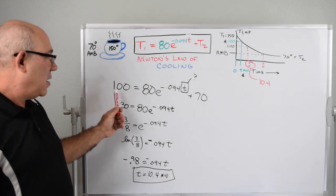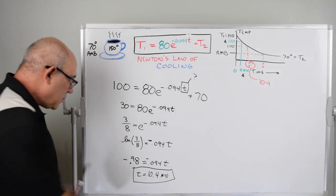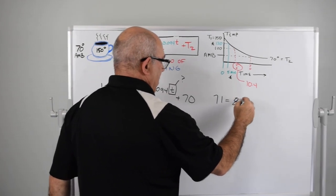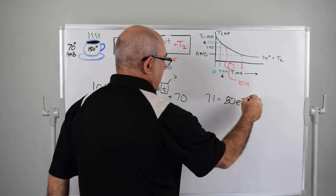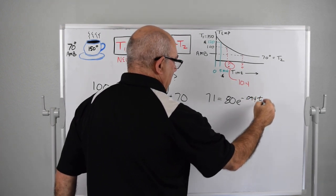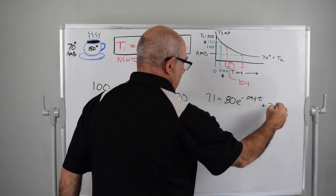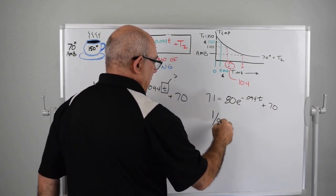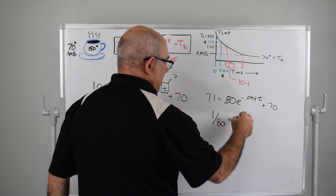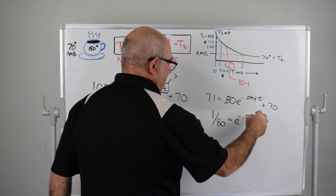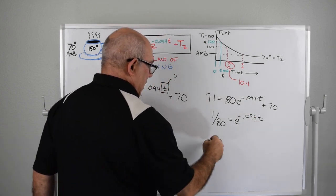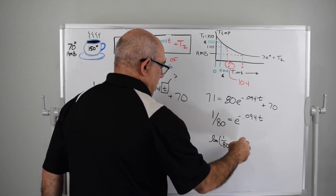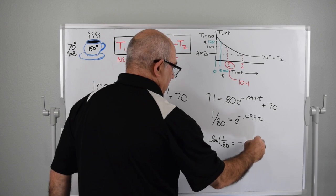We have 71 equals 80 e to the minus 0.094 t plus 70. If we take the 70 over here, we have 1 divided by 80 equals e to the minus 0.094 t. Take the log of both sides: the log of 1 over 80 equals minus 0.094 t.